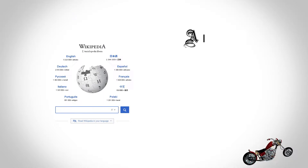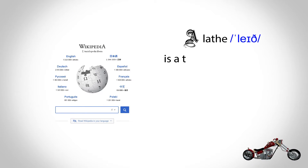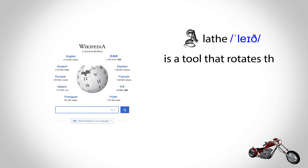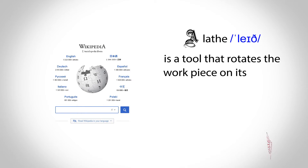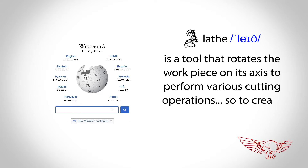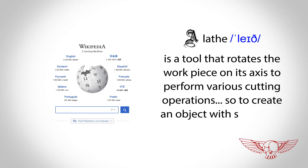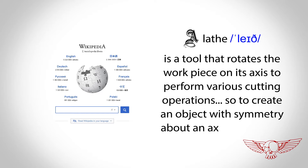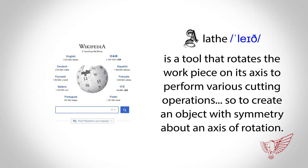In order to use a lathe we need to understand what it is and what are its basic parts. Wikipedia states a lathe is a tool that rotates the workpiece on its axis to perform various cutting operations, so to create an object with symmetry above an axis of rotation.